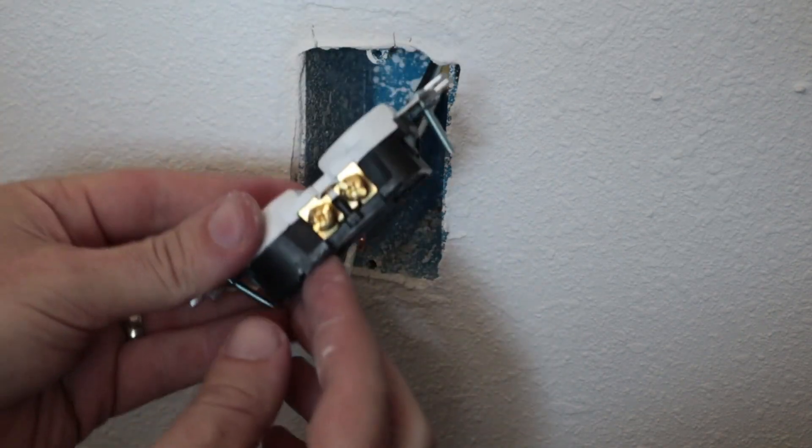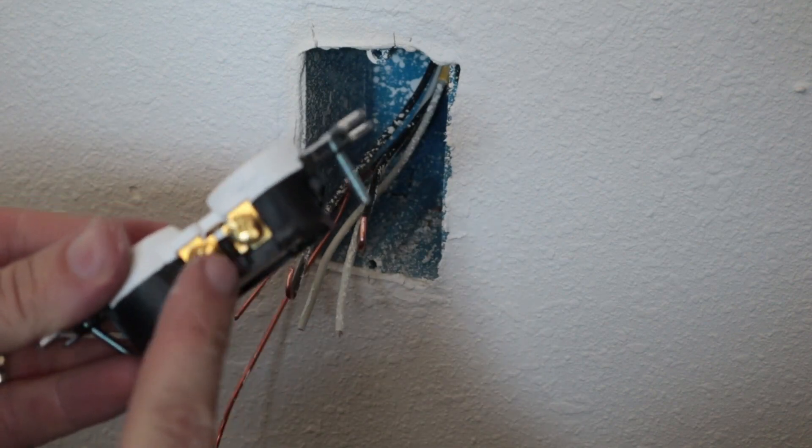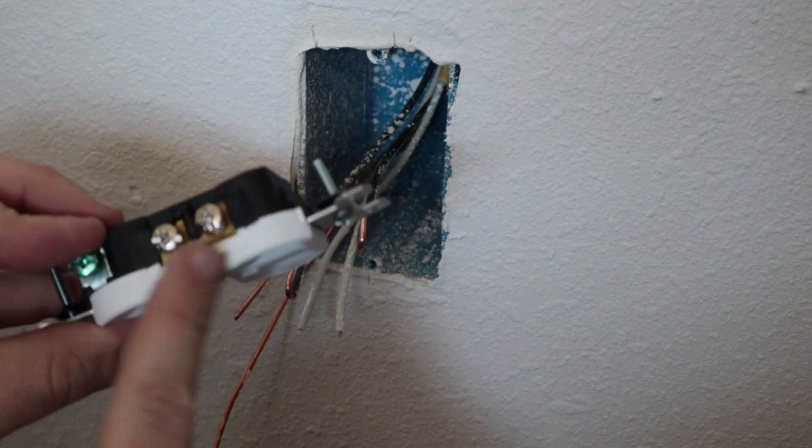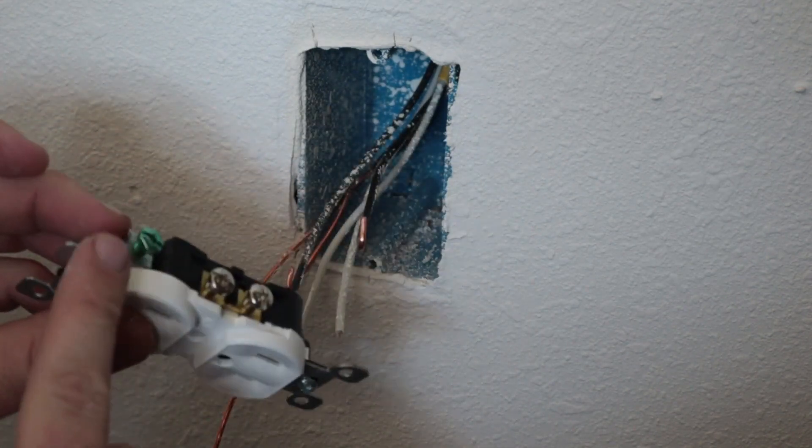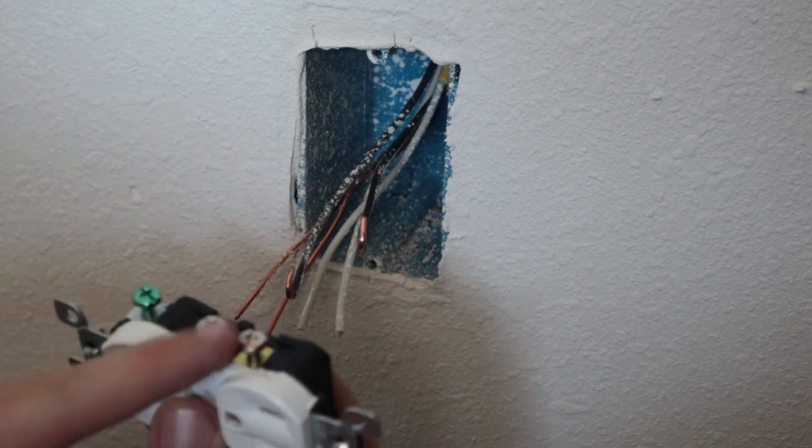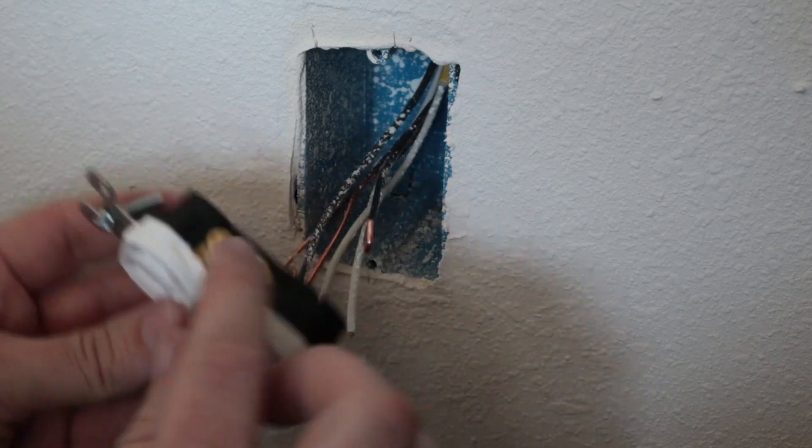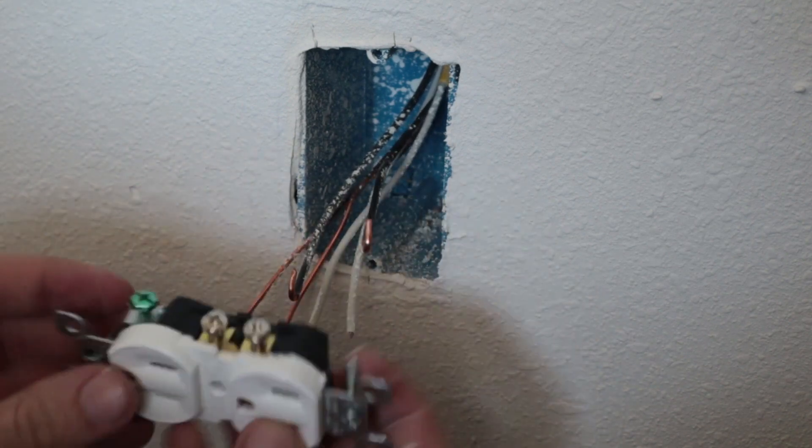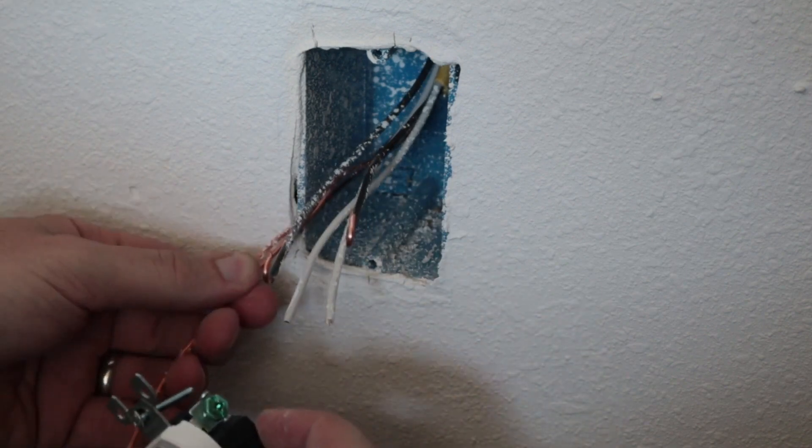Now the outlet has two sides. It has a copper screw and it has a silver screw, and then it has a green grounding screw. The silver screws are for the white wire. The copper screws are for the black wires. And the green screw is for these ones that are like copper looking wires.